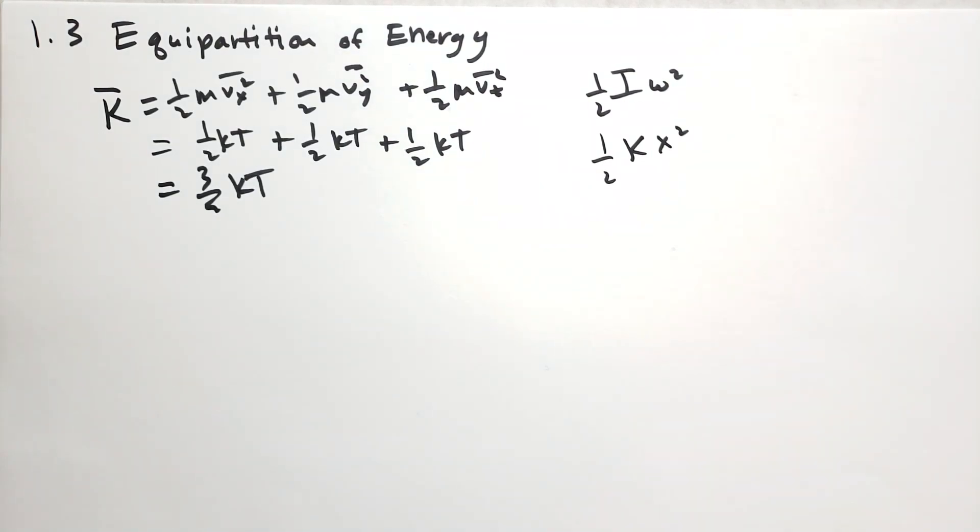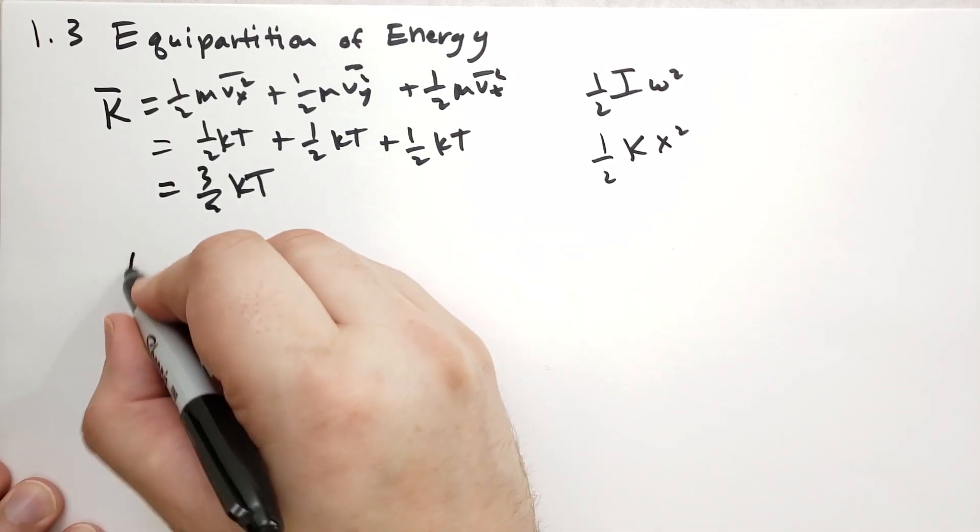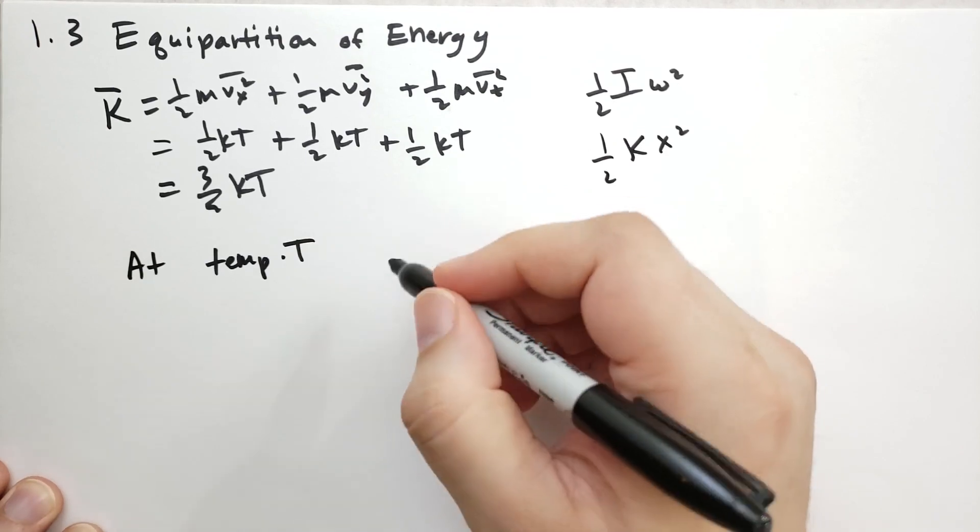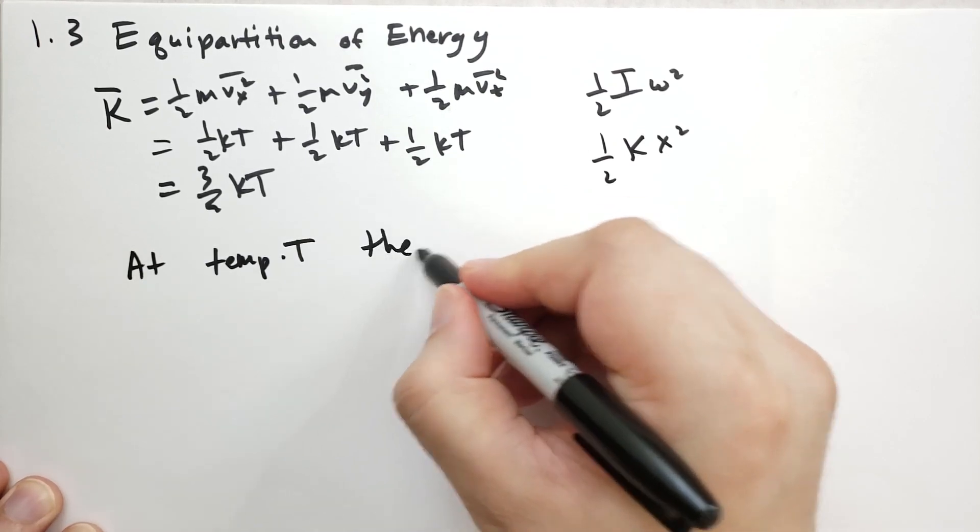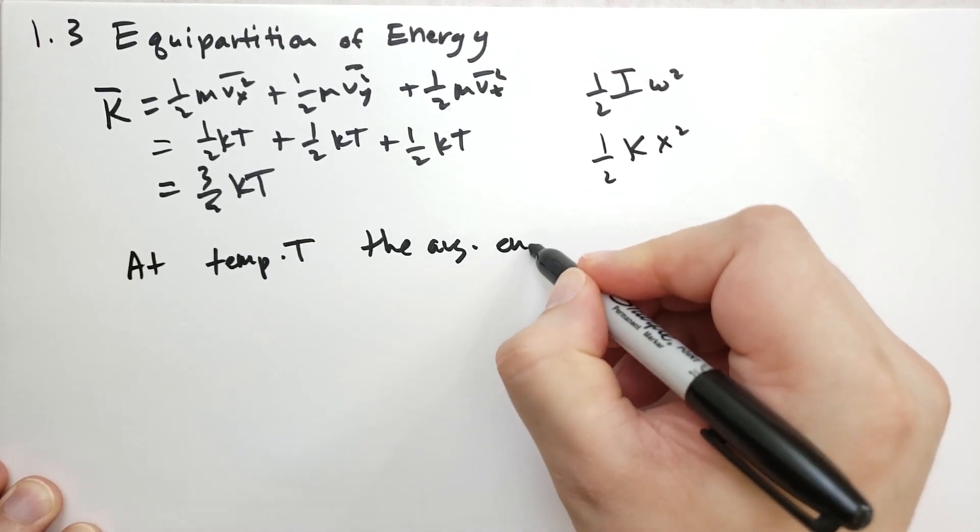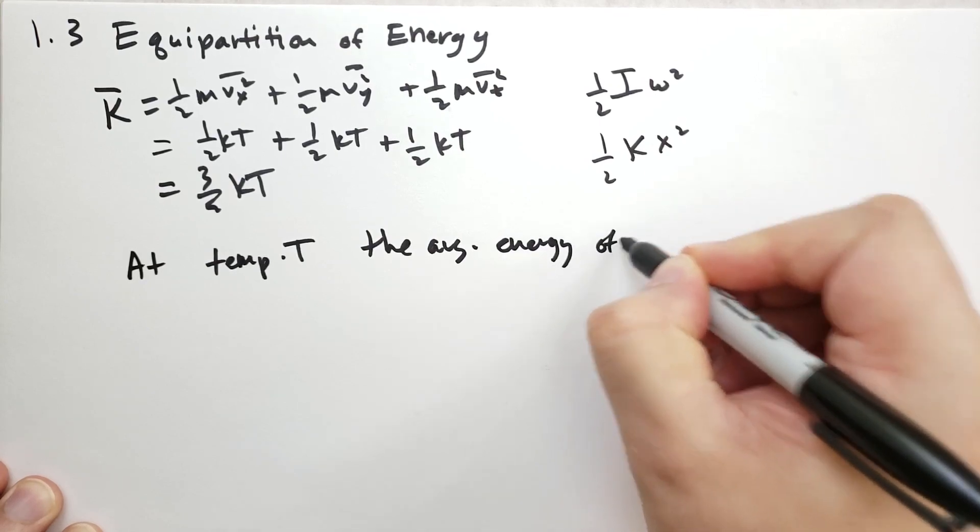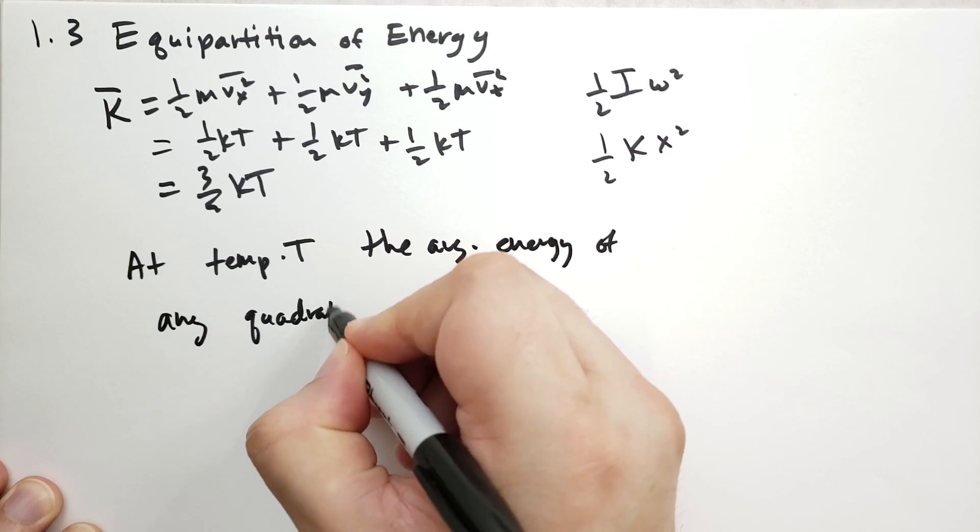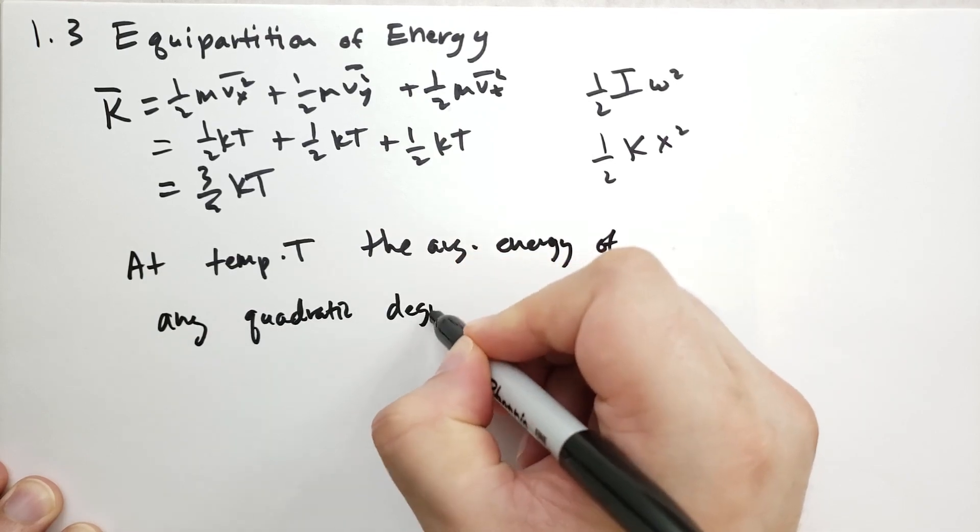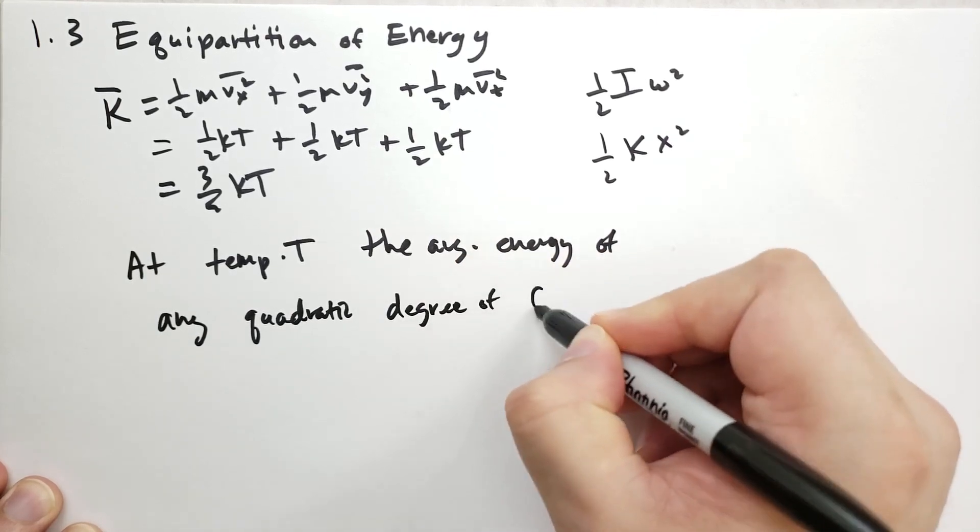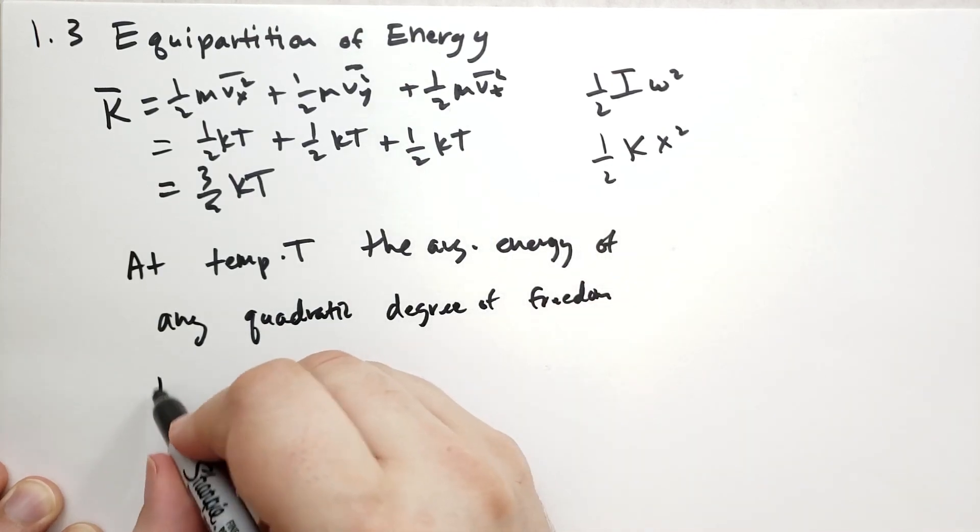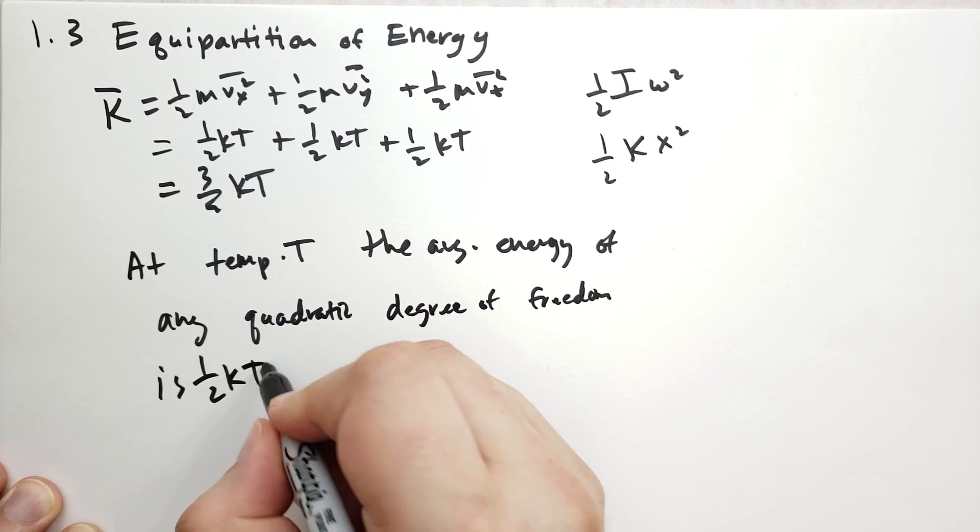What the Equipartition Theorem says is it says at temperature T, the average energy of any quadratic degree of freedom is 1/2 kT.